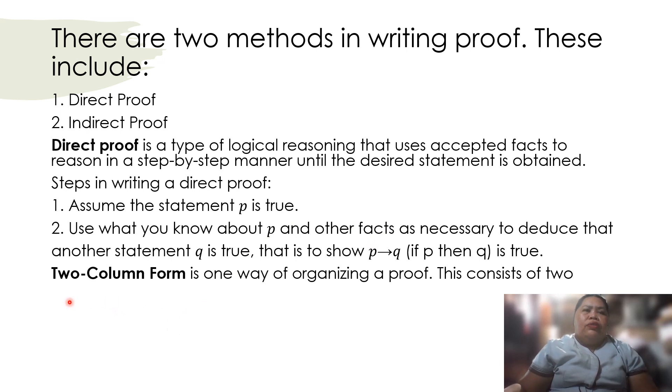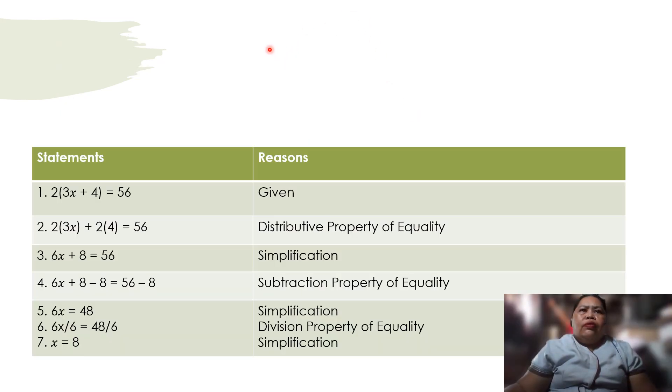We're using the two-column form. Now, it's one way of organizing a proof, and this consists of two columns, one for statement and one for reasons.